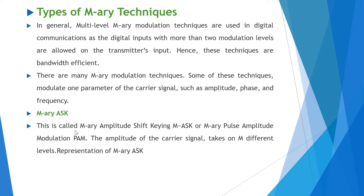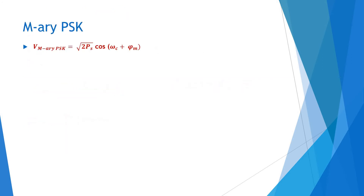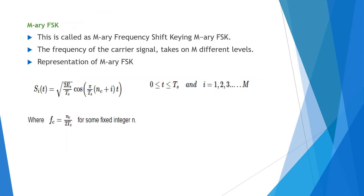For M-Array ASK, called M-Array Amplitude Shift Keying, the amplitude of the carrier signal takes on M different levels. For M-Array FSK, the frequency of the carrier takes on M different levels. The representation of M-Array FSK is: Si(t) = √(2Es/Ts) · cos(πi/Ts + C), where T is between 0 to Ts, and i goes up to M.